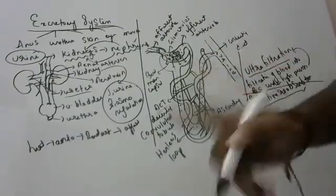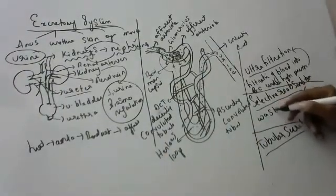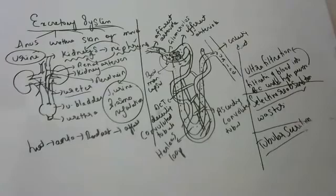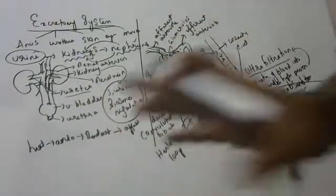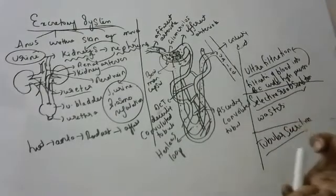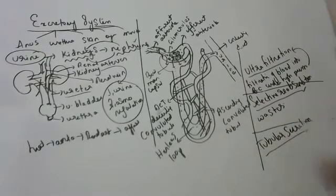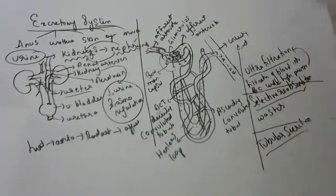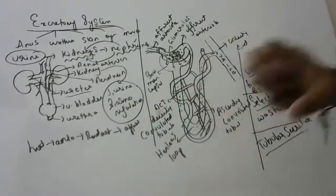Finally, everything will be taken back except waste. What will be taken back? Water, glucose, salts - everything useful will be reabsorbed. Except leaving the waste behind. This is called selective reabsorption - it will select and reabsorb only the useful substances.